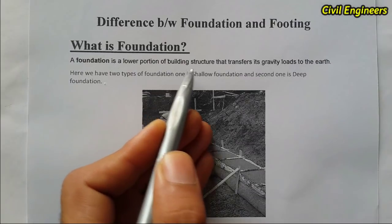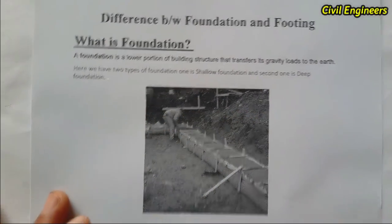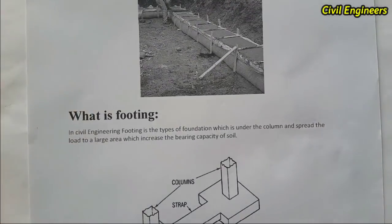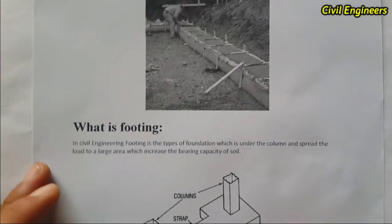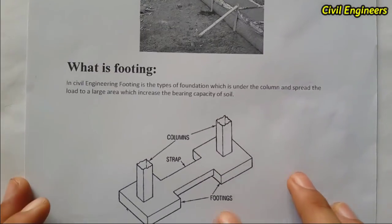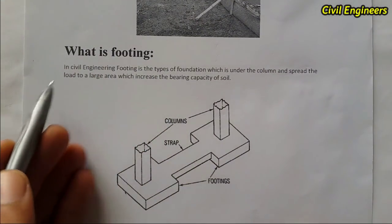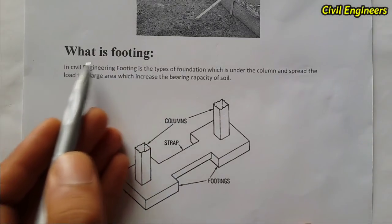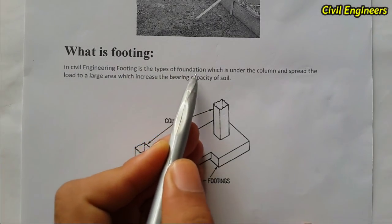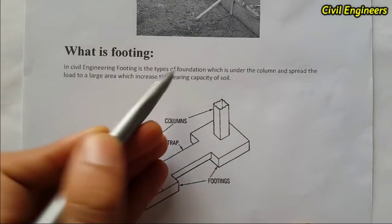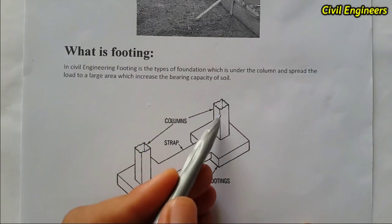So to summarize, a foundation is the lower portion of a building structure that transfers its gravity load to the earth. Now the second topic: what is footing? In civil engineering, footing is a type of foundation which is placed under the column.